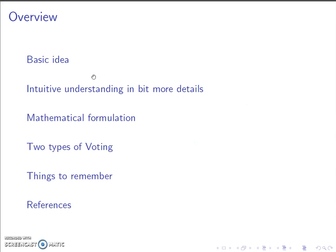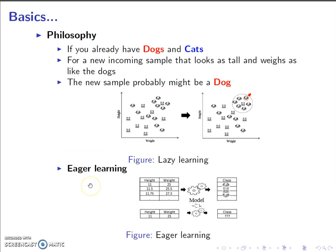The flow of this lecture will be: first, a basic idea of KNN; followed by a more intuitive understanding of the details; third, the mathematical formulation of the algorithm; followed by a short discussion of two kinds of voting strategies; then a quick look at things to remember when implementing KNN in a classification framework; and lastly, the books I referred to while building this lecture.